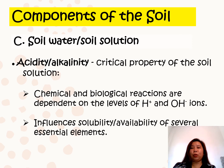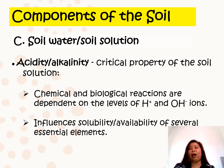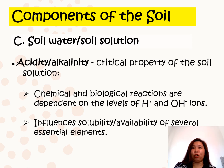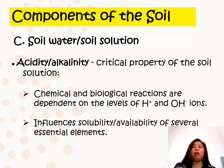Soil water or soil solution is also an indicator of soil pH, or soil acidity or alkalinity. This is a critical property of the soil solution because the most important chemical and biological reactions in the soil depend on the levels of hydrogen and hydroxyl ions, which can influence the solubility or availability of several essential elements for plant growth.